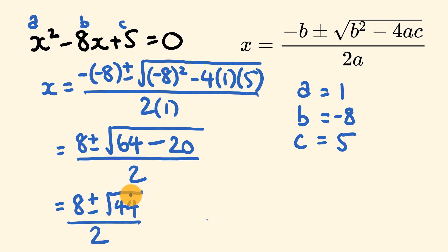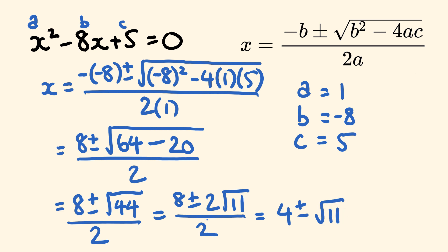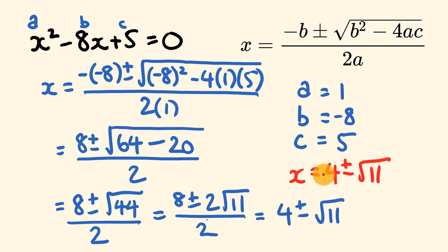We have 8 plus or minus the square root of 64 minus 20. 64 minus 20 is equal to 44, all over 2. The square root of 44 doesn't simplify very nicely, so we simplify the radical: it becomes 2 root 11. So we have 8 plus or minus 2 root 11 over 2. Dividing through by 2: 8 divided by 2 is 4, and 2 root 11 divided by 2 is root 11. So x equals 4 plus or minus the square root of 11. Most teachers will be happy if you leave it in this form.